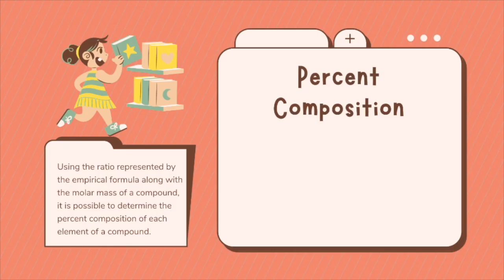Now, what about percent composition? Using the ratio represented by the empirical formula, along with the molar mass of your compound, it is possible to determine the percent composition of each element in a compound. Let's work through an example. First, we have to find the number of atoms of each element in the empirical formula for ethanol.